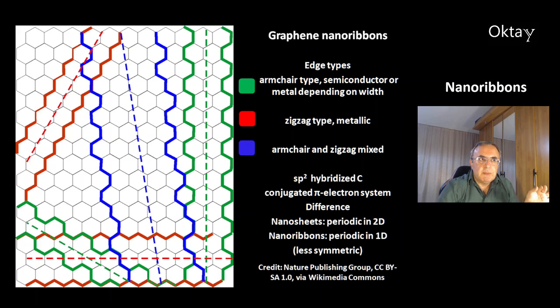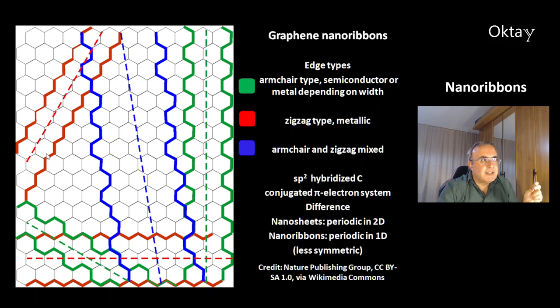This is an overview of graphene nanoribbons — there are several types. In green you can see the armchair type. Armchair type graphene nanoribbons are semiconductors or metals, depending on the width. In red you can see the zigzag type, and they are always metallic. The mixed versions of armchair and zigzag, shown here in blue, are another type of nanoribbon.